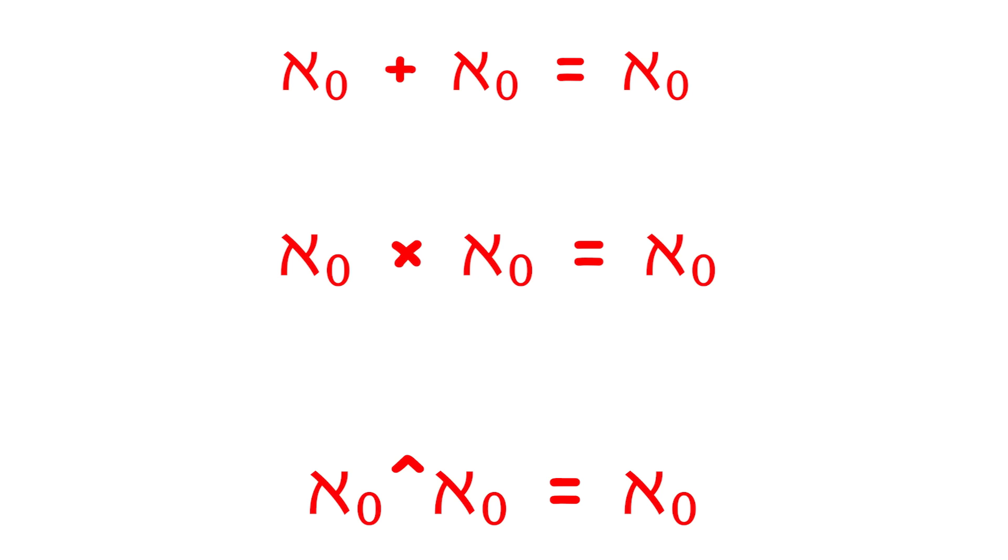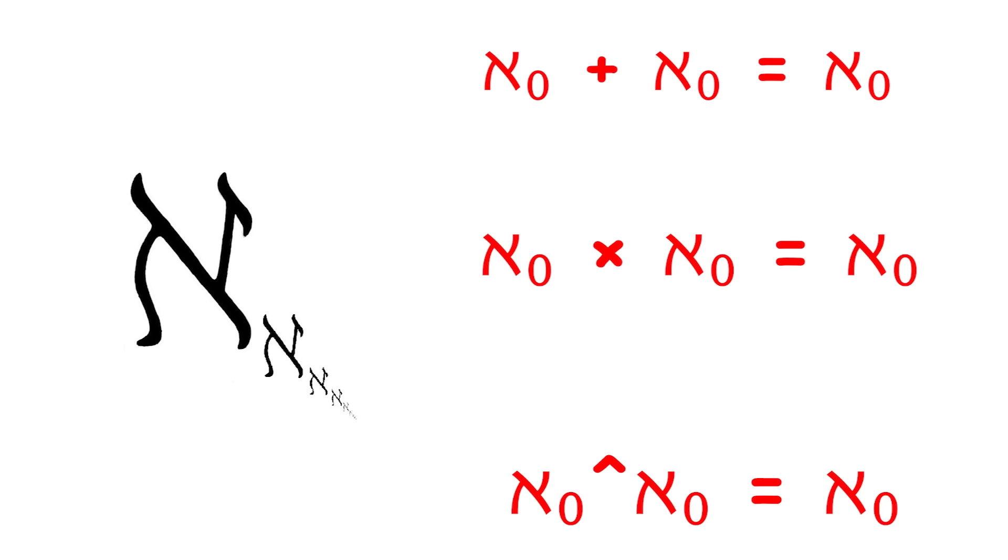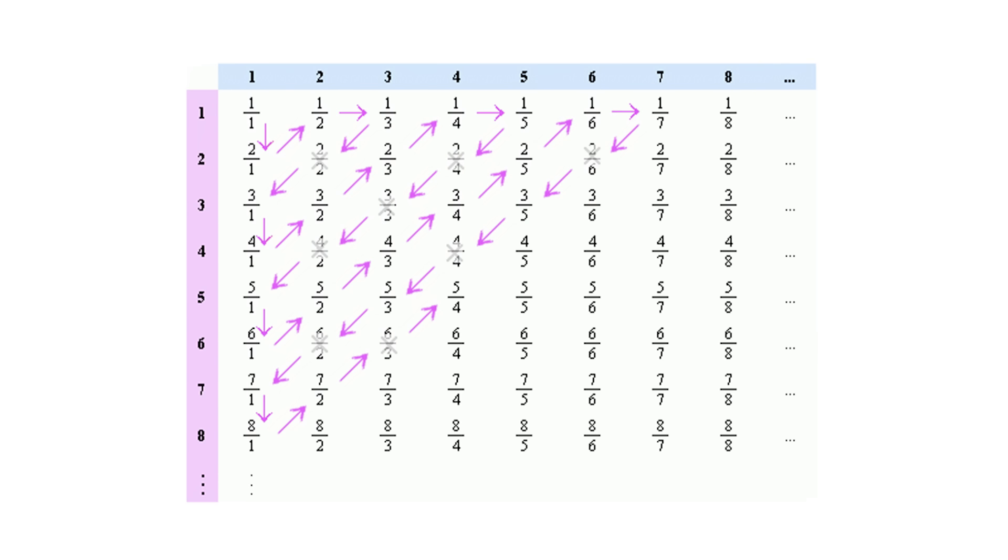Aleph null can also be used to compare the size of infinite sets. For example, the set of rational numbers has the same cardinality as the set of natural numbers, aleph null, while the set of real numbers has a larger cardinality of 2 to the power of aleph null. Aleph null is used in Cantor's diagonal argument, which proves that the set of real numbers has a larger cardinality than the set of natural numbers.